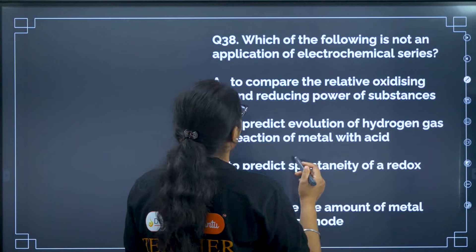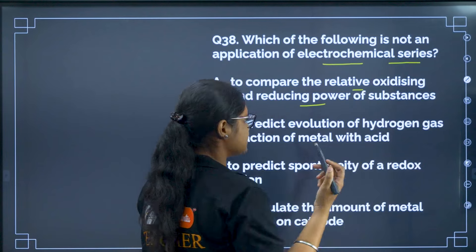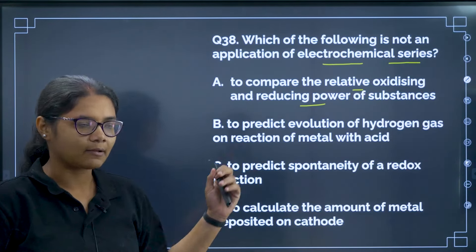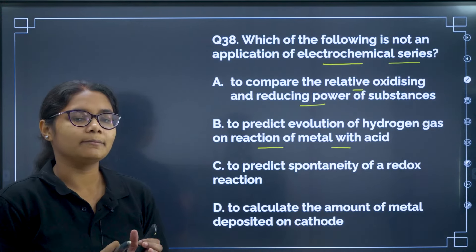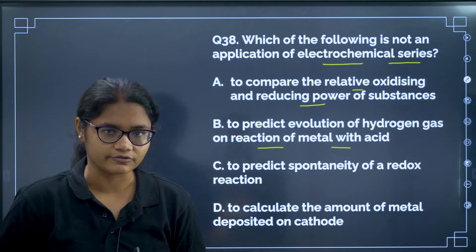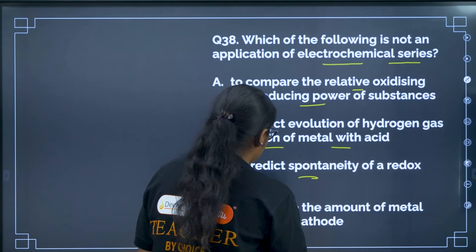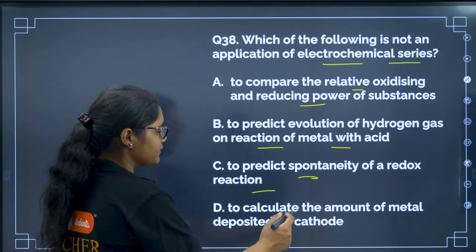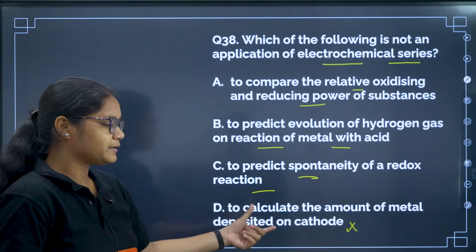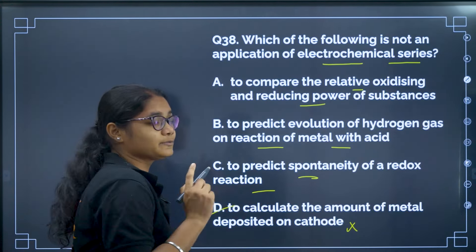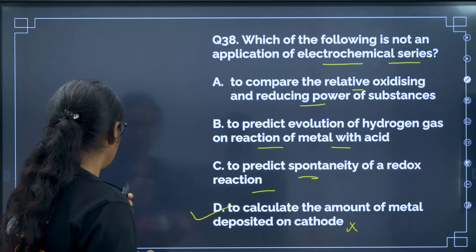Question 38: Which of the following is NOT an application of the electrochemical series? Comparing relative oxidizing and reducing power — yes, that is an application. Predicting evolution of hydrogen gas — also an application; metals with reduction potential greater than hydrogen like copper cannot produce hydrogen. Predicting spontaneity — also an application. Calculating the amount of metal deposited on the cathode uses Faraday's law, not the electrochemical series. So the correct answer is option D.